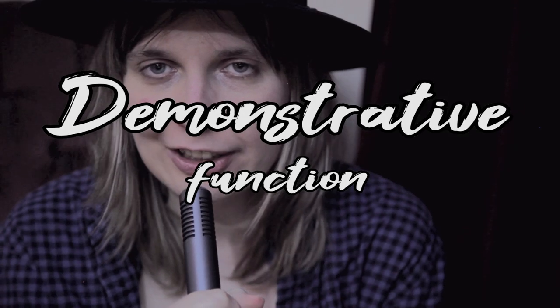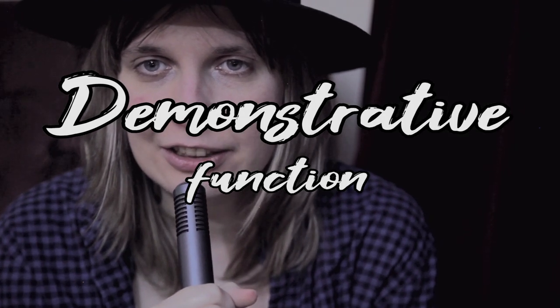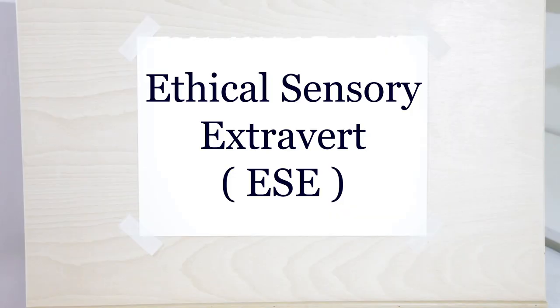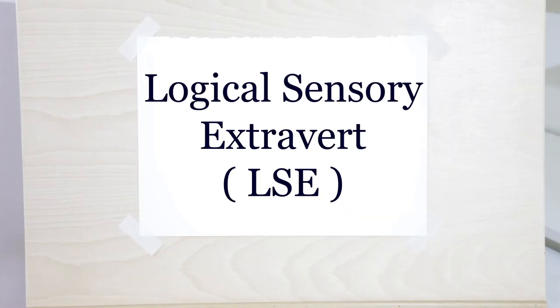The demonstrative function is unvalued and strong. An interesting feature of the demonstrative function is that it is the vulnerable of the dual, your complementary opposite. Therefore, the information coming to this function is deflected into a valid aspect, often the one on the opposite side of a dichotomy. For SE, that would be NE. There are two types that have SE as a demonstrative function: the ethical sensory extrovert, ESE, and the logical sensory extrovert, LSE.